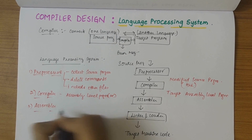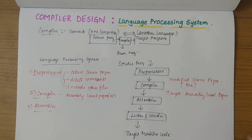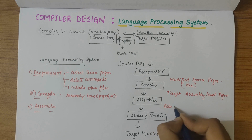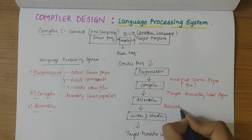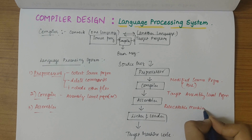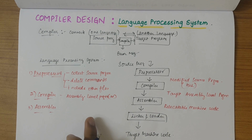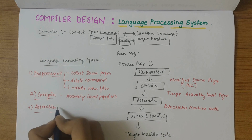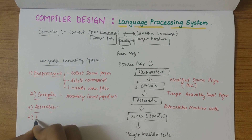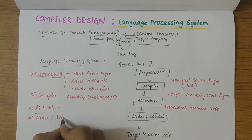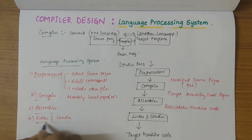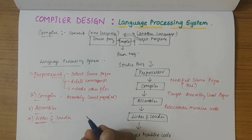Then we have the assembler. The assembler accepts the assembly-level program and produces relocatable machine code as output. The assembly language is the symbolic form of the machine language of a computer and is easy to translate — that is what the assembler does.